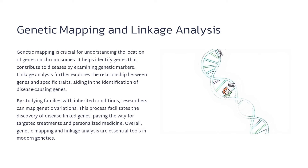Genetic mapping helps us identify the location of genes on chromosomes, which is crucial for understanding how genes influence traits and diseases. Linkage analysis explores the relationship between genes and specific traits, allowing us to understand the genetic basis of inherited conditions. By studying families with inherited conditions, researchers can map the genetic variations that contribute to those conditions. The insights gained are paving the way for targeted treatments and personalized medicine, where therapies can be tailored to an individual's genetic profile.